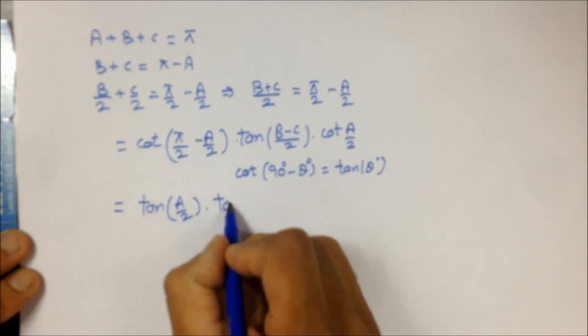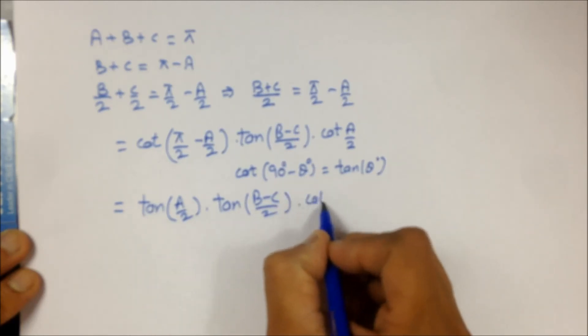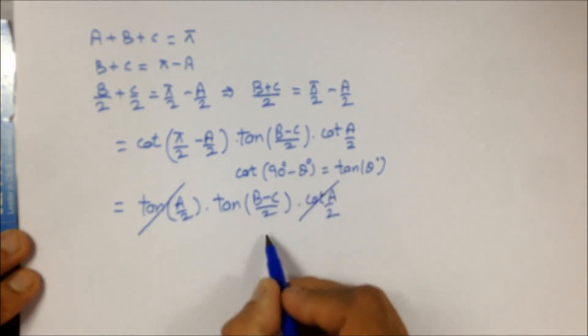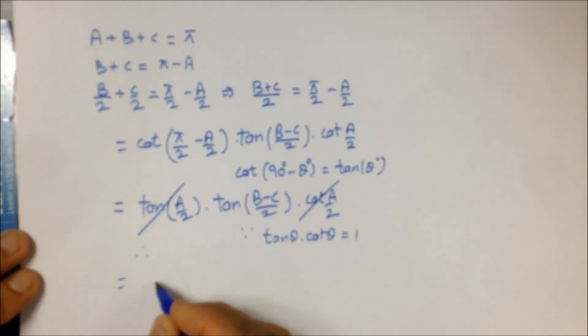Now tan and cot can be cancelled easily because tan(θ)·cot(θ) = 1. Presentations are also very important. Therefore we are left with what we need.